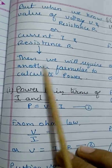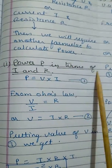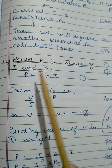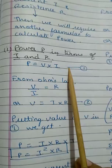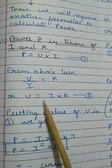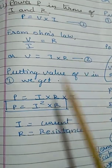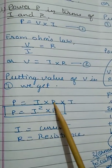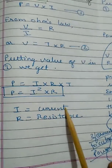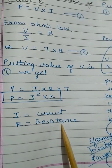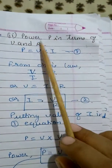Power P in terms of I and R: we know P equals V×I. From Ohm's law, V equals IR. Putting the value of V into equation one, we get P equals I×R×I, that is P equals I²R. Here I is current and R is resistance.